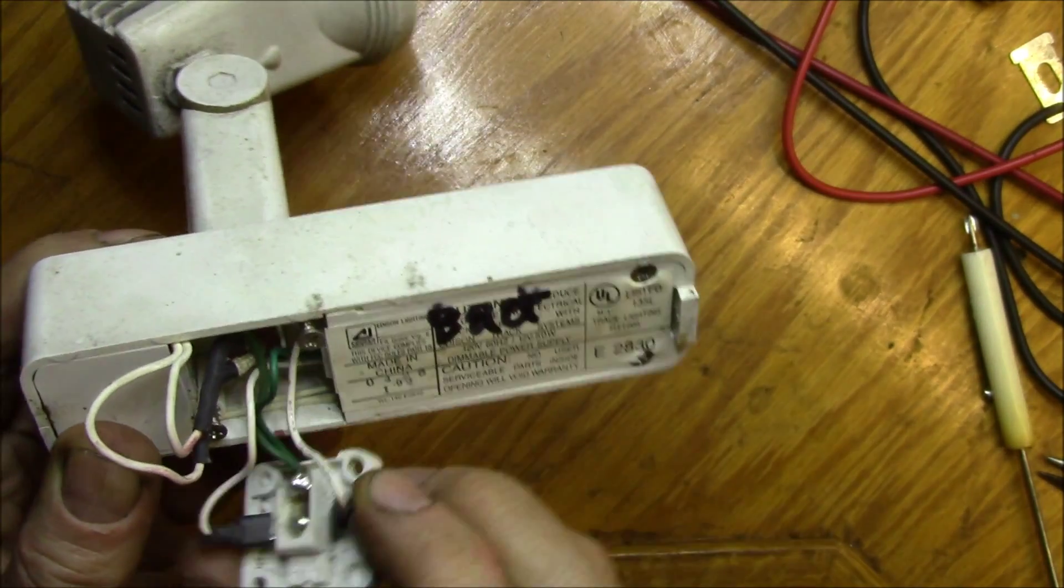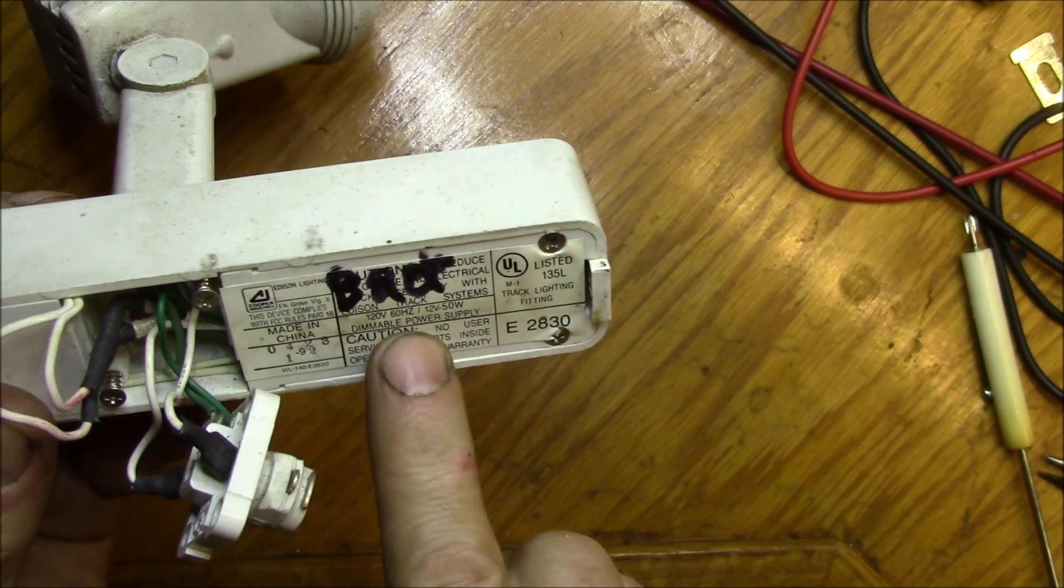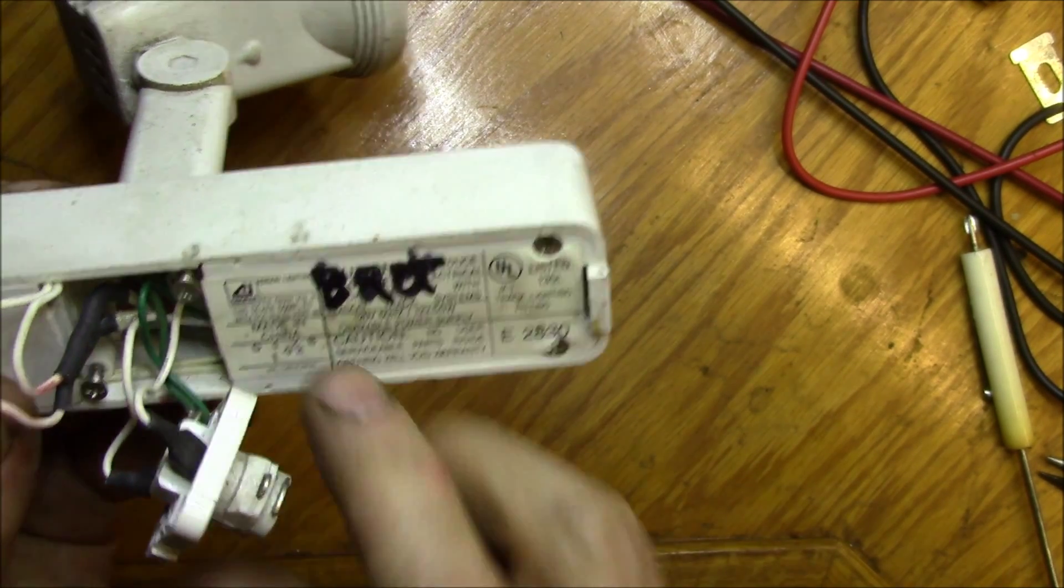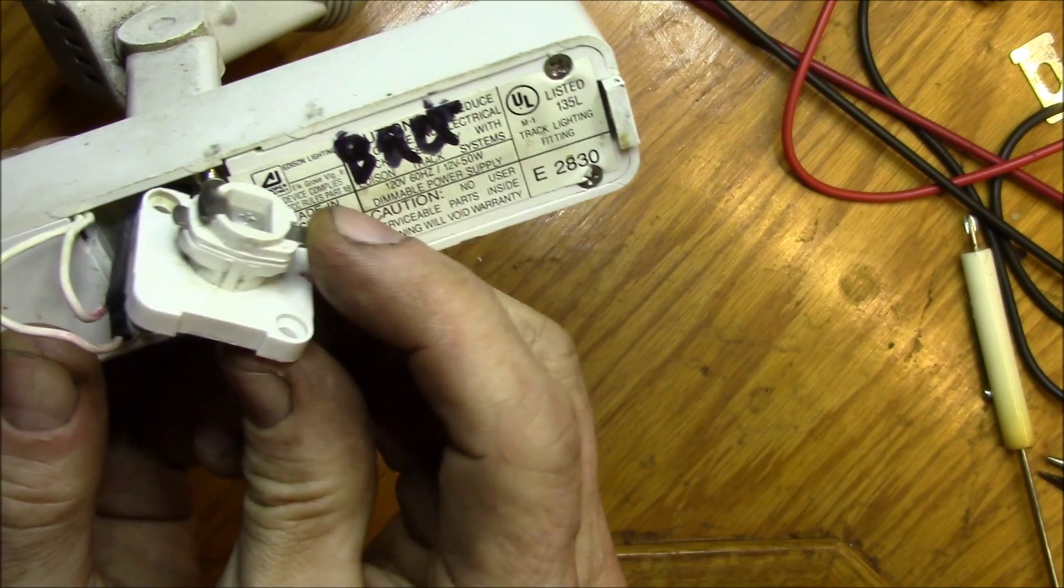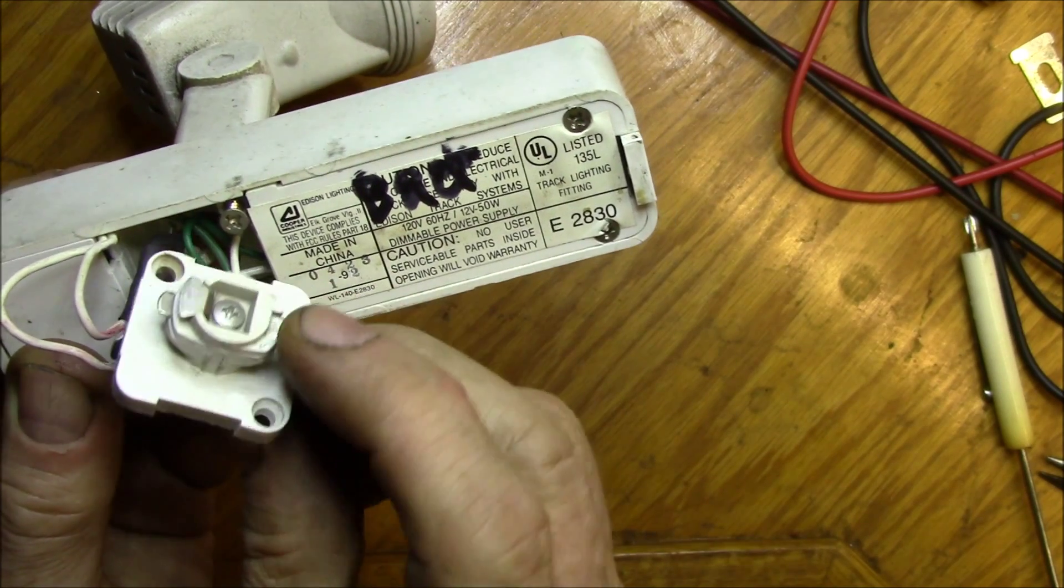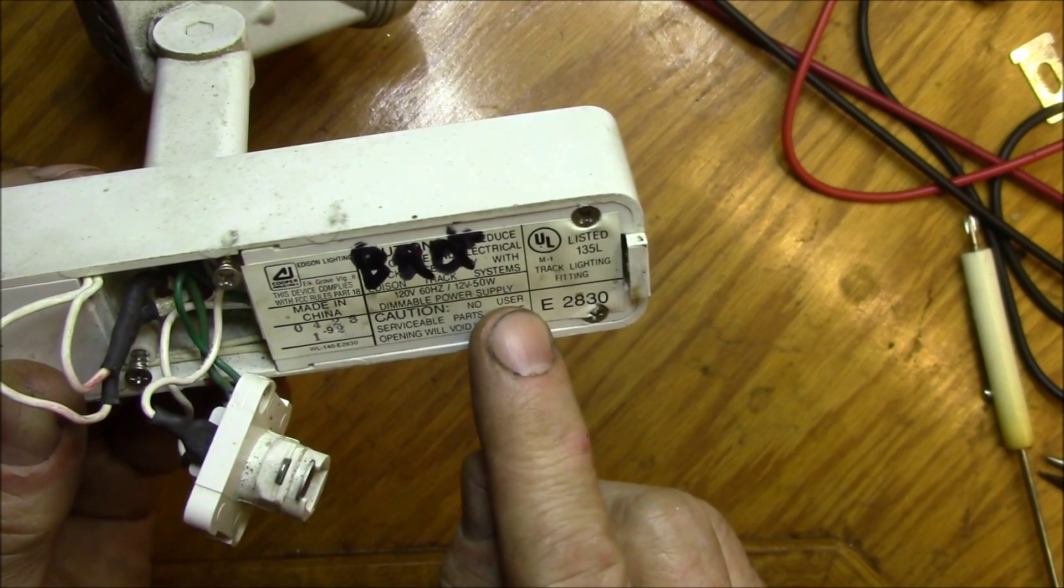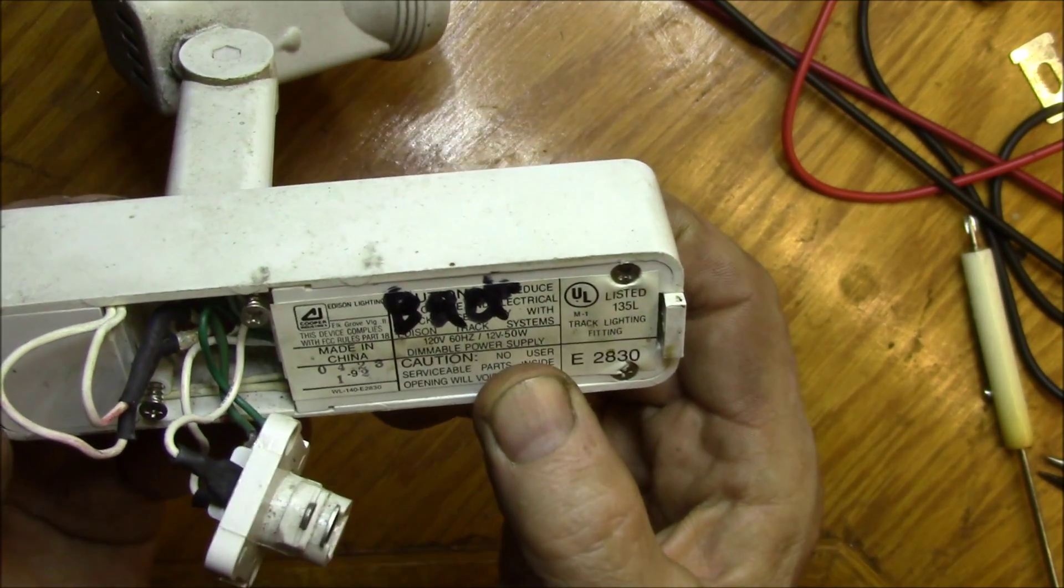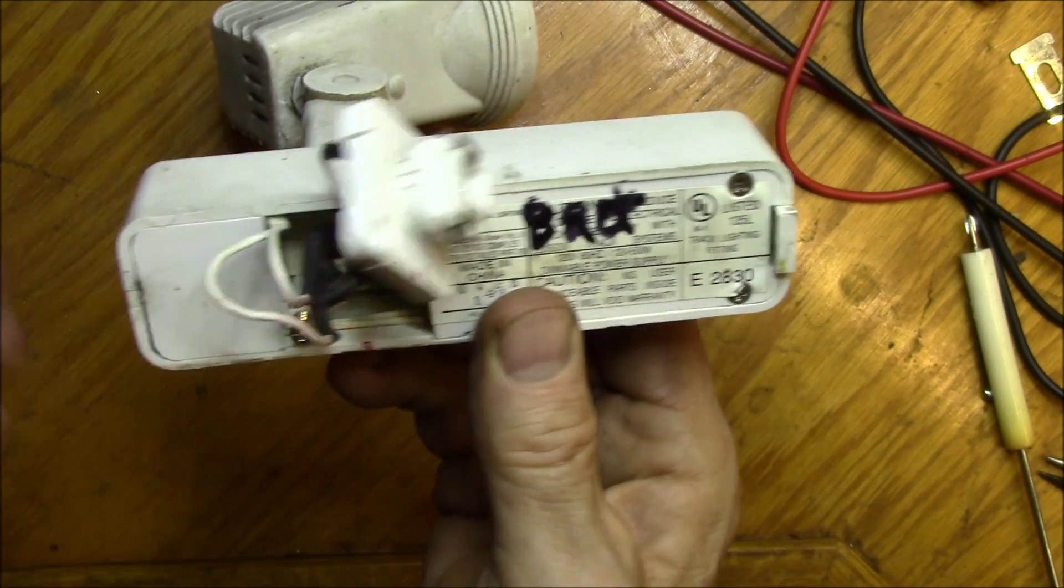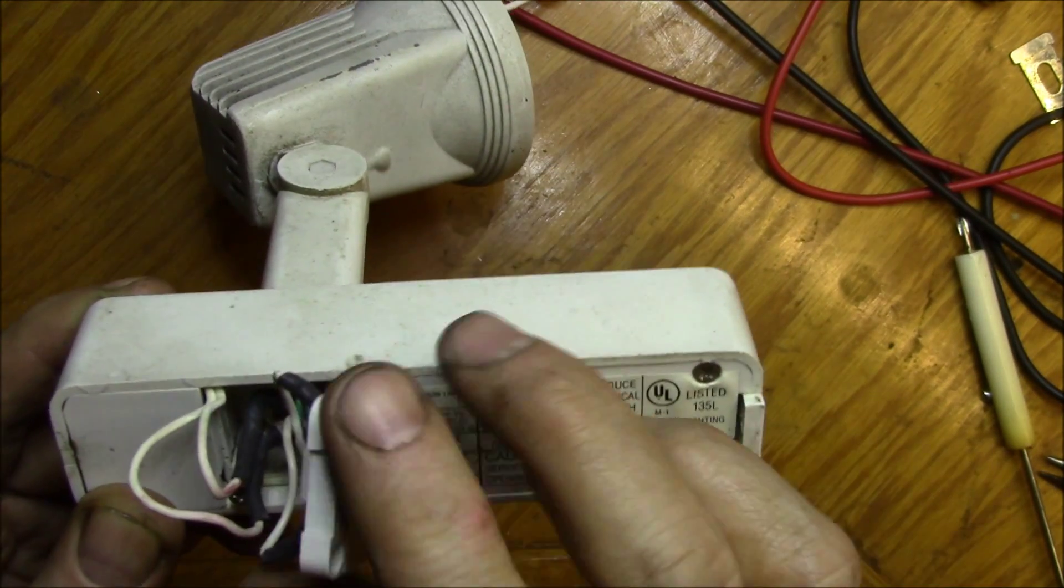These date from 1992. The way these work is this is a 120 volt input which comes in on your track connector here - got ground, I think this is neutral and hot on the other side. And then in here is a little electronic transformer power supply.